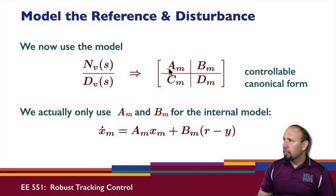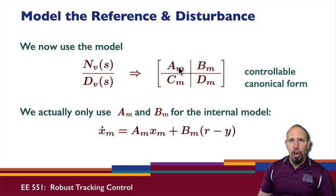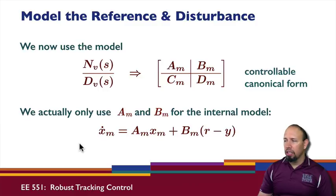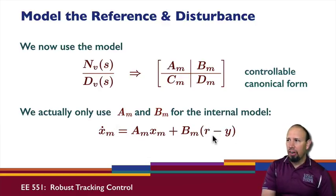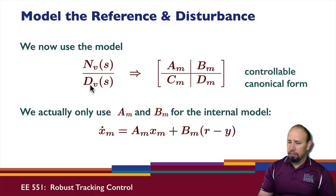We put this rational function into controllable canonical form. The main part we're concerned with is AM and BM, and the pair AM, BM is controllable by construction. So we only use AM and BM for the internal model. The model has its own state XM, where XM dot equals AM*XM plus BM times (R minus Y) — that is, it takes into account the tracking error. Note that AM includes a model of both the tracking reference signal and the disturbance through DV, which uses both DR and DW.